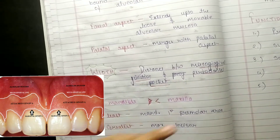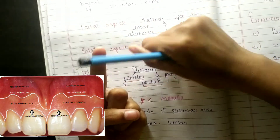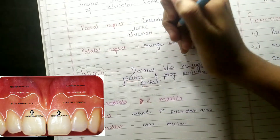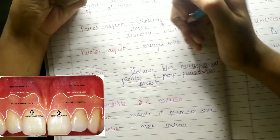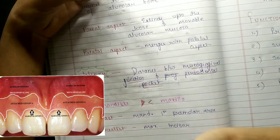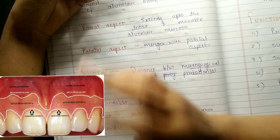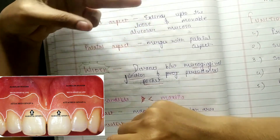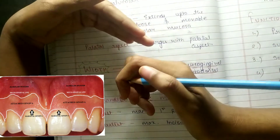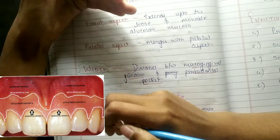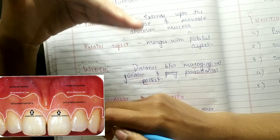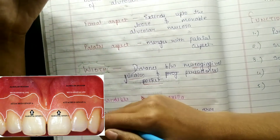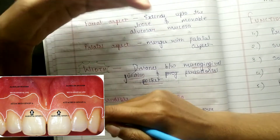Attached gingiva will be divided into two parts. First of all, we will talk about the introduction, where we will talk about the width of attached gingiva. We will also talk about the functions of attached gingiva, and in the next video we will talk about the depth of attached gingiva.